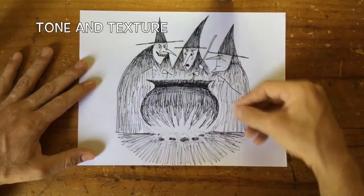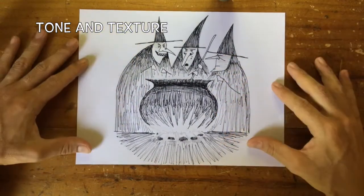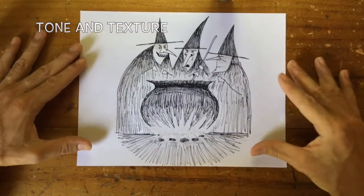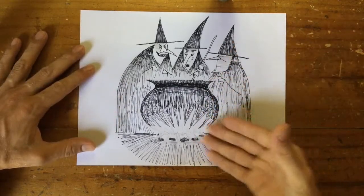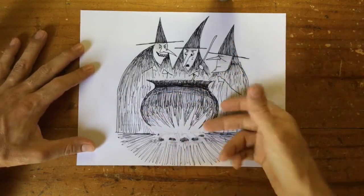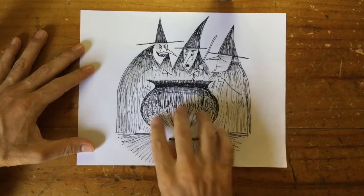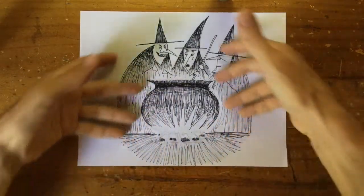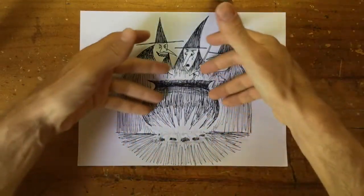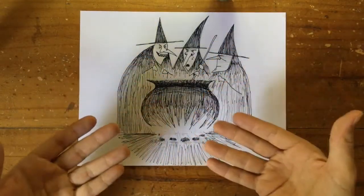And then we use the pencil as well, just to fill in some grey. So it's a nice way of working, nice combination. With this picture, we've got areas of light and dark because of the flames. So the flames under the cauldron are of course white, and then they're lighting up the witches from behind the cauldron, which makes the cauldron stand out.